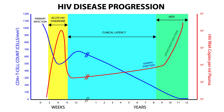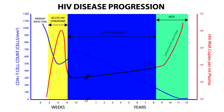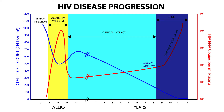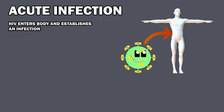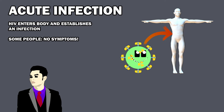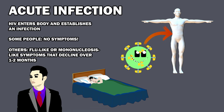There are three stages of HIV infection: the acute infection, the chronic or latent phase, and AIDS. The acute infection begins when HIV enters the body and establishes an infection. Some people get no symptoms during this period, though typically there will be flu-like or mononucleosis-like symptoms that decline over one to two months.